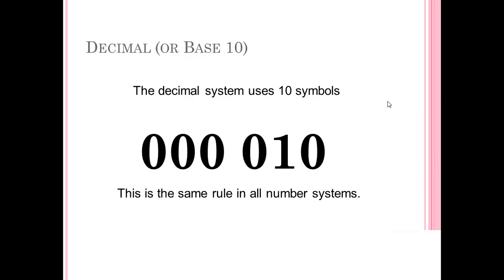That rule is the same in all number systems. Each place value advances by multiples of 10. This is the ones place.